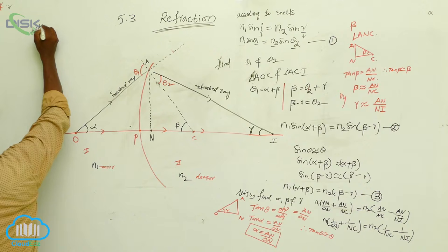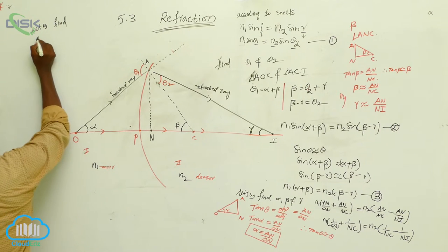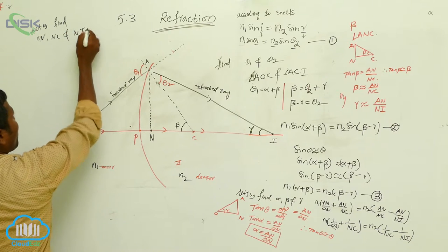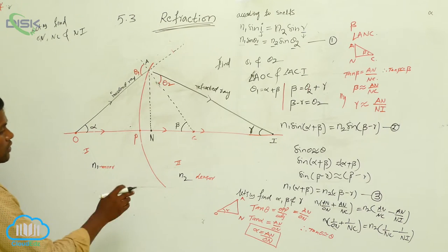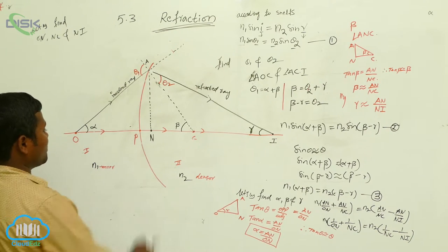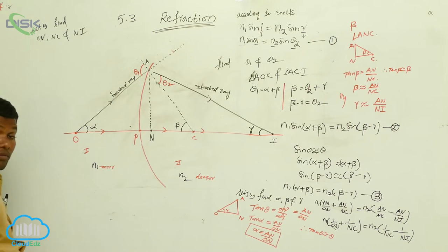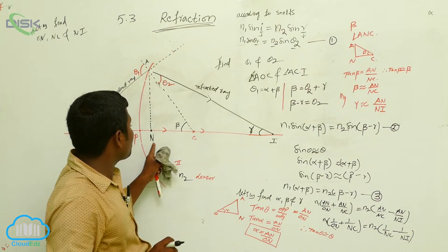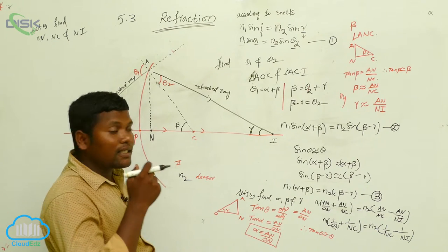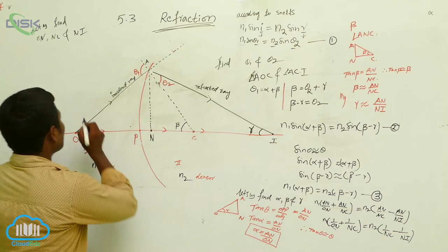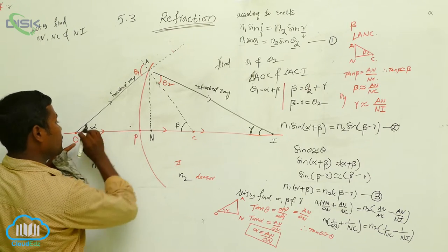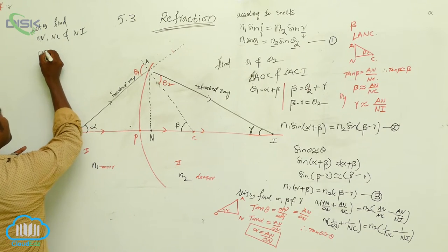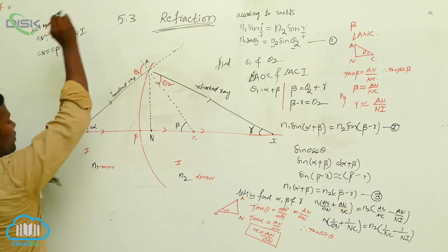Let us find what ON is. Since we considered the principal axis and the point N is very close to the pole P when the aperture is small, ON is approximately equal to OP. Similarly, NC is approximately equal to PC. And NI is approximately equal to PI. So we can make these three substitutions: ON = OP, NC = PC, and NI = PI.